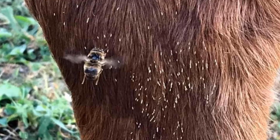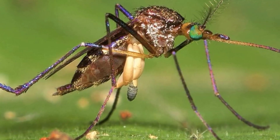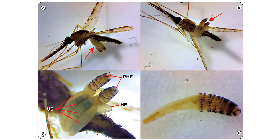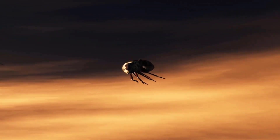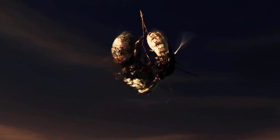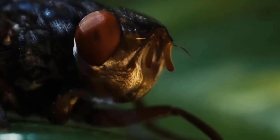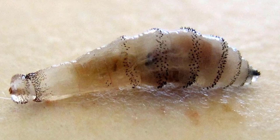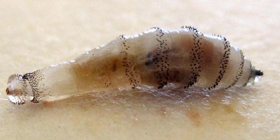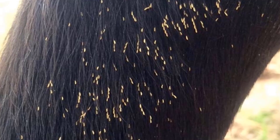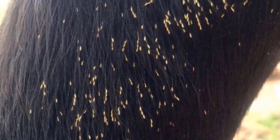Botflies deposit eggs on a host, or sometimes use an intermediate vector such as a common housefly, mosquitoes, and, in the case of Dermatobia hominis, a species of tick. After mating, the female botfly captures the phoretic insect by holding onto its wings with her legs. She then makes the slip, attaching 15 to 30 eggs onto the insect or arachnid's abdomen, where they incubate. The fertilized female does this over and over again to distribute the 100 to 400 eggs she produces in her short adult stage of life.